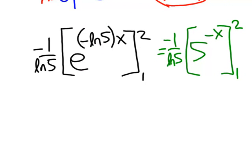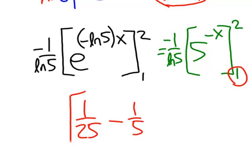From 1 to 2 with a constant out front. We'll now plug in our limits of integration. Let's plug in the 2 first. 5 to the negative 2 power is the same as 1 over 5 squared, so 1/25th minus, if we plug in that 1 there, 5 to the negative 1 power is just 1 over 5, with the constant, of course, still out front.